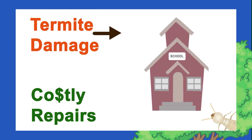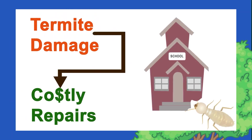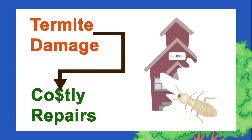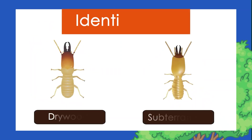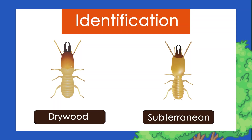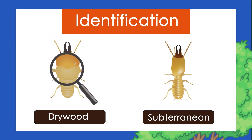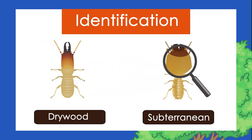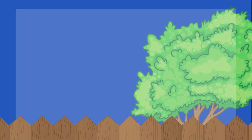Termites are a major pest, mostly due to the damage they can cause to a structure which leads to costly repairs. Identification is important to effectively manage termites. In California, the two most common termites that cause structural damage are drywood termites and subterranean termites. Now let's take a closer look at these species.